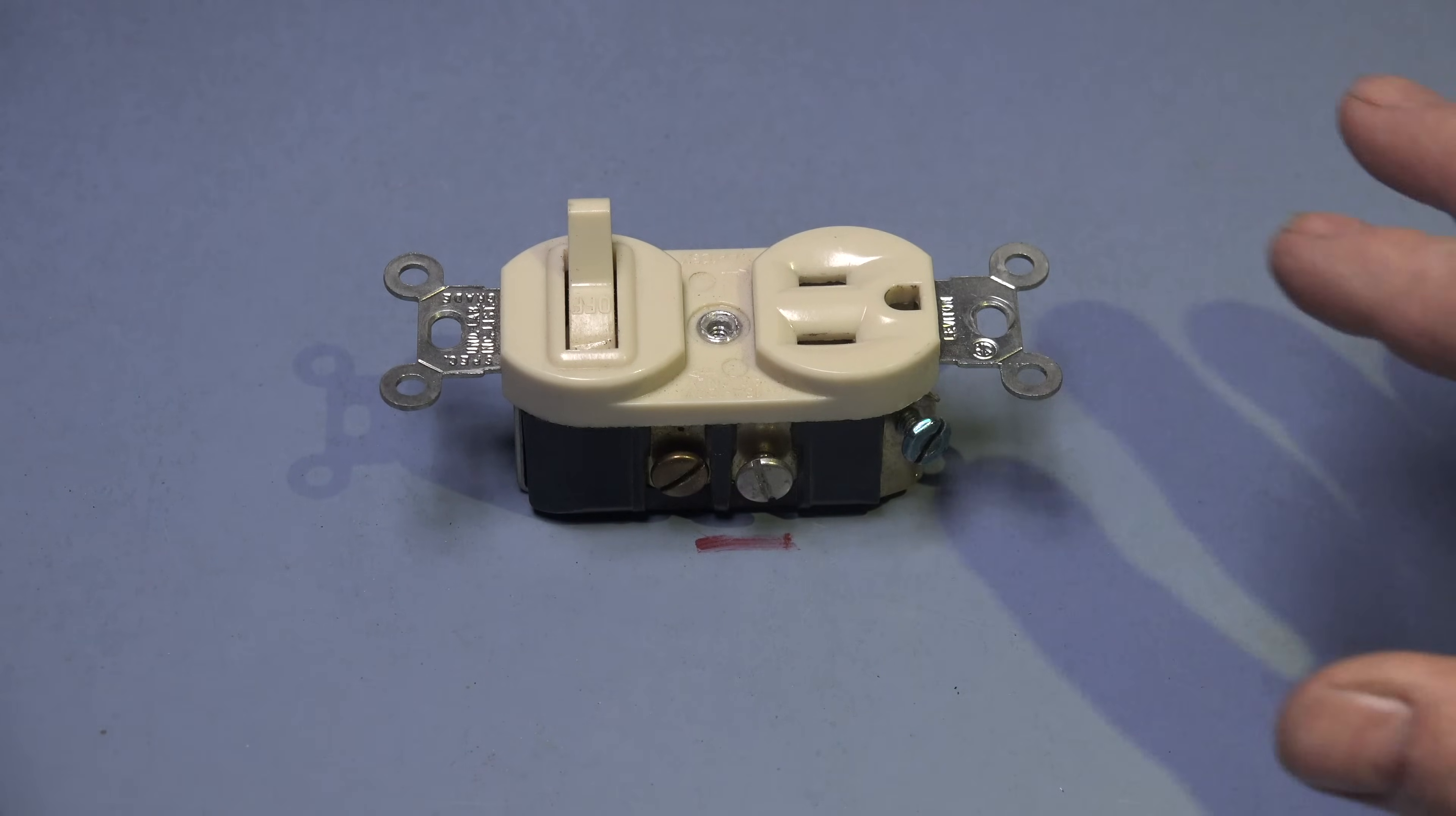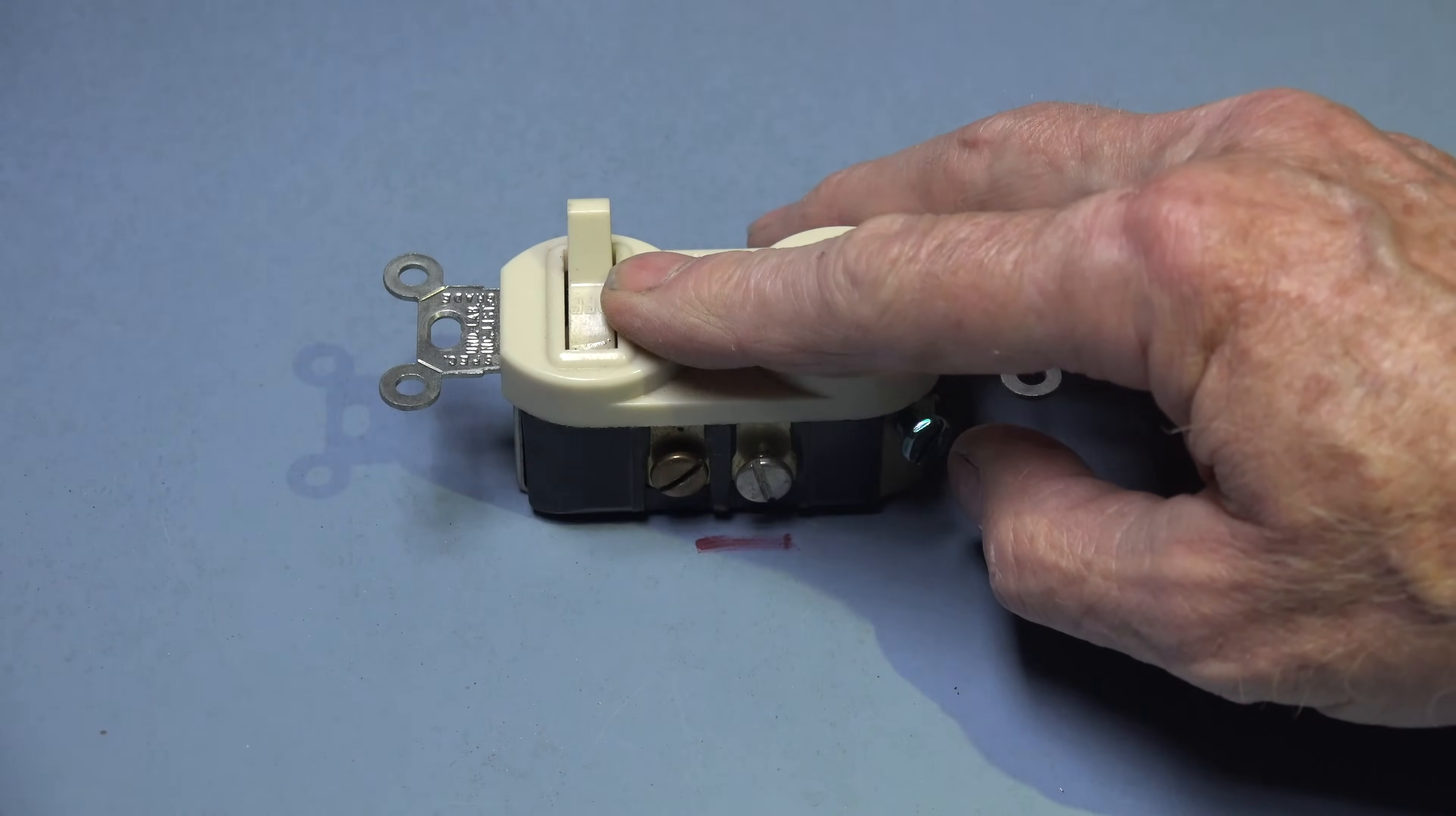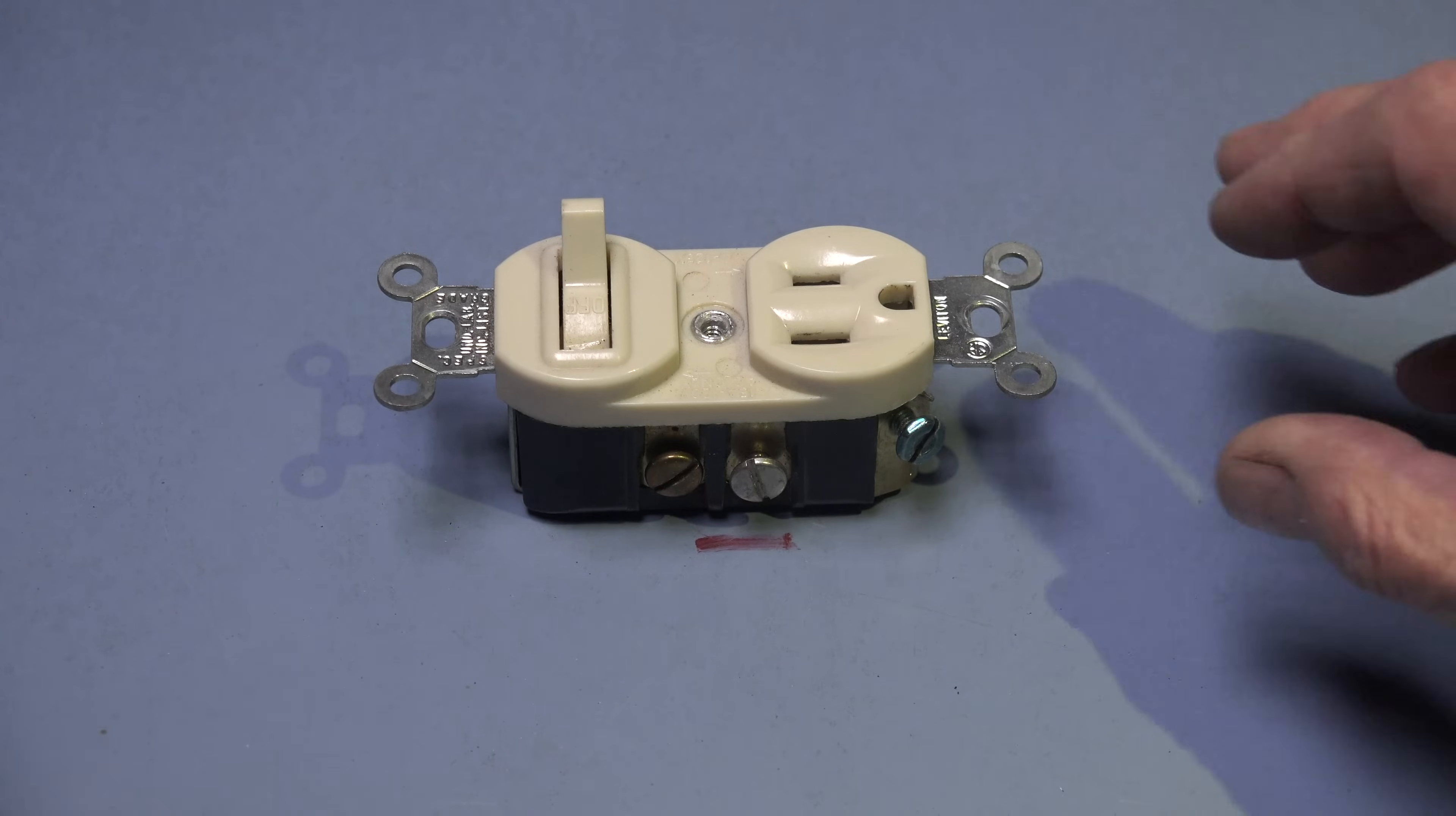I've been asked about how you wire this combination switch and outlet. Now oftentimes these are used on HVAC applications where the switch here will be the disconnect for the indoor air handler and then this outlet is available for accessories like an electronic air cleaner or condensate pump. So there's a couple of ways you can set this up.